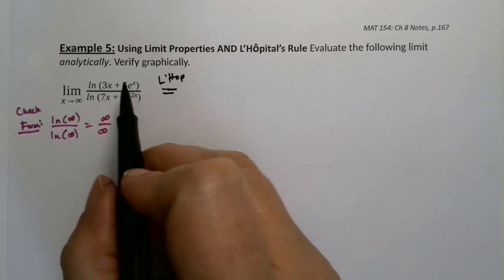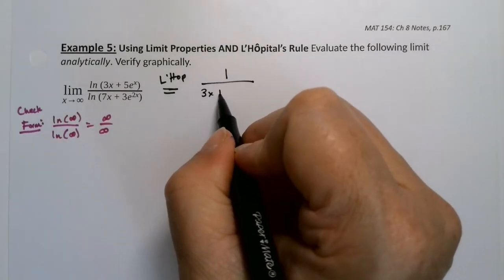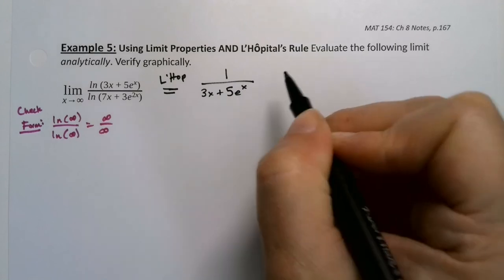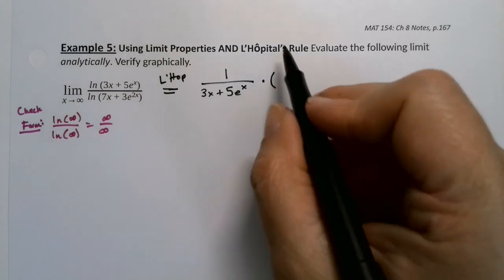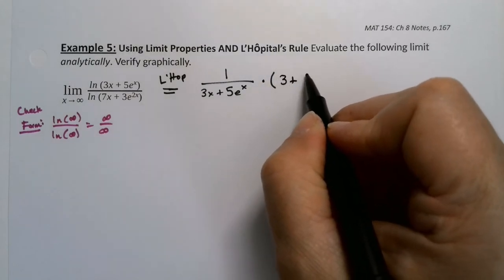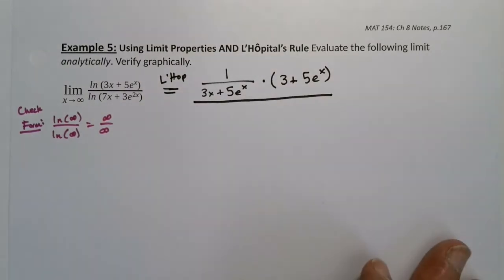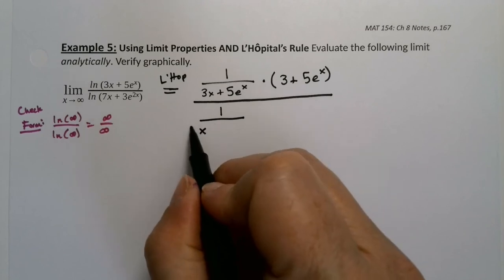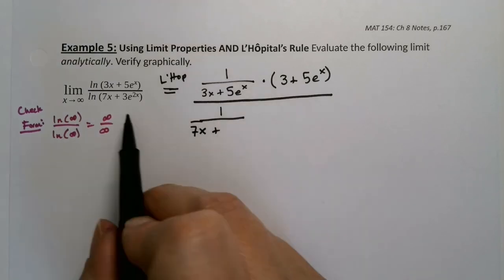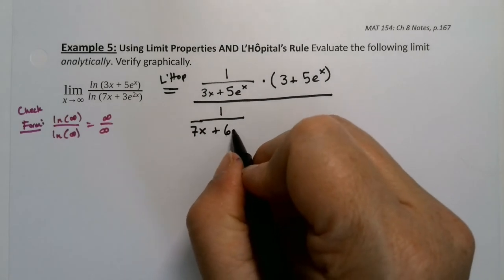The derivative of the natural log of something is one over that something, times the derivative of that something, because of the chain rule. So the derivative of ln(3x + 5e^x) gives us (3 + 5e^x) in the numerator, divided by, and down here, 1 over (7x + ...) and then this next part involves the chain rule: 3e^(2x) times 2.